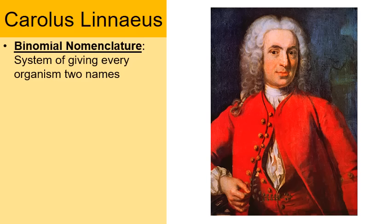Binomial nomenclature is the system of giving every organism two names. You've probably heard examples of it — for instance, humans have the scientific name Homo sapiens. Two names, Homo and sapiens — that's an example of binomial nomenclature.